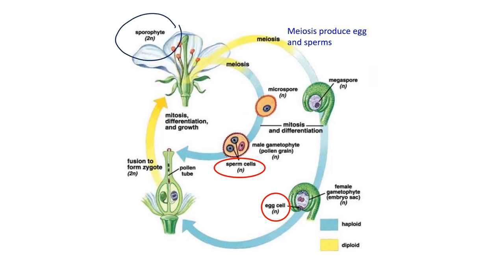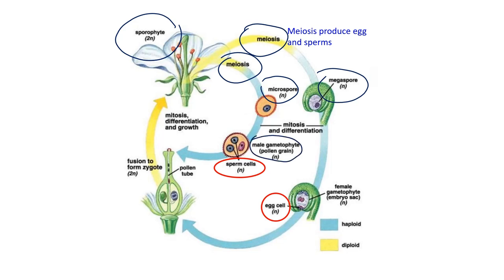In this diagram, a flowering plant in the diploid state undergoes meiosis, producing microspores and megaspores. Microspores are haploid and undergo mitosis and differentiation into the male gametophyte, forming sperm cells — two sperm cells are produced. Megaspores form the female gametophyte, producing an egg cell. The fusion of sperm and egg cells produces a zygote.